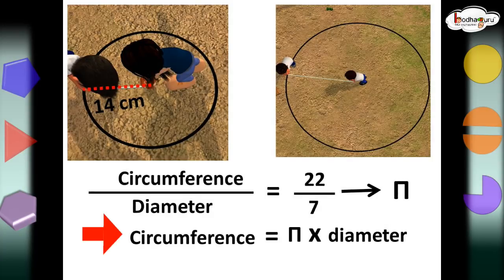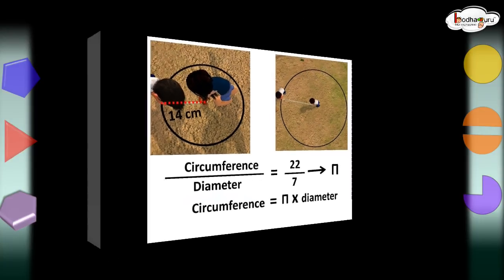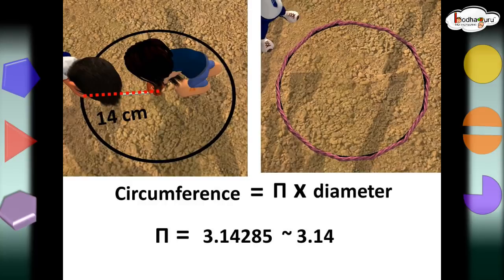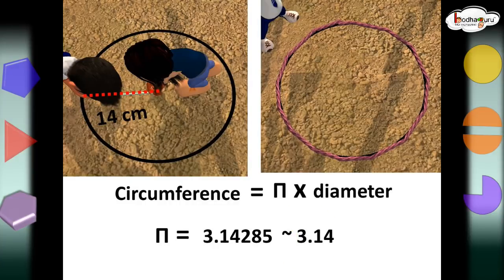So, the circumference of a circle is 22 by 7 multiplied by its diameter. So, the circumference of a circle is equal to pi multiplied by d, where d is the diameter. If you calculate the value of pi, that is 22 by 7, we get almost 3.14285. You know, it's a non-terminating, non-recurring decimal number. In short, we can write it as 3.14.